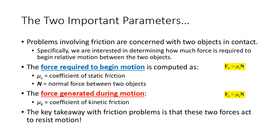The frictional force between planes is a function of the normal force and the coefficient of friction. There are two different coefficients: a coefficient of static friction and a coefficient of kinetic friction. Which is always larger? The coefficient of static friction is always higher — it's harder to get an object started than to keep it moving. Coefficients of static friction are always higher than coefficients of kinetic friction.